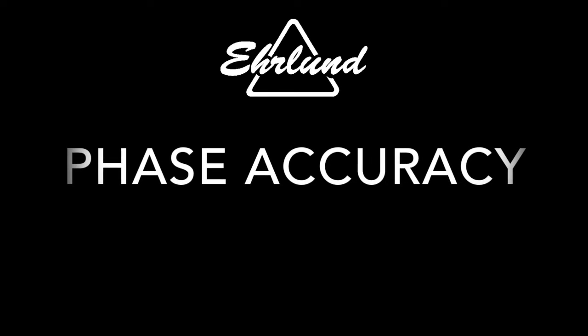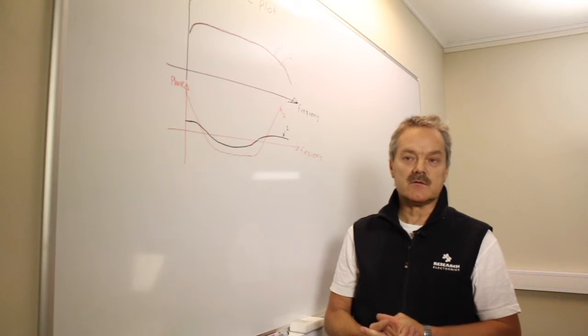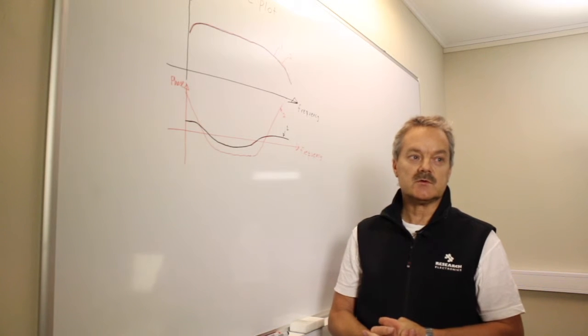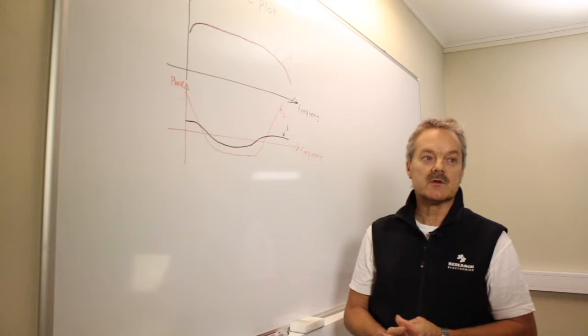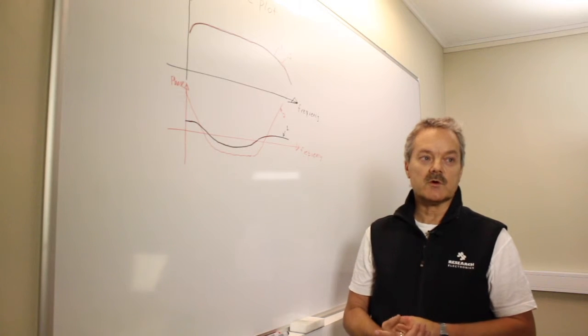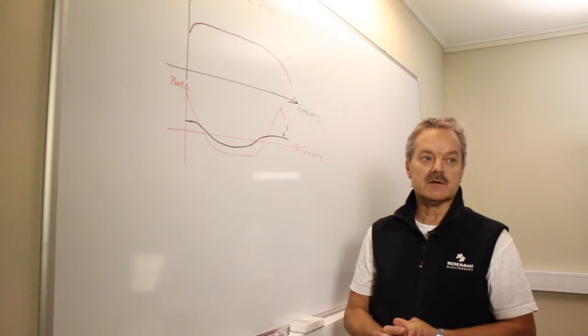Phase Accuracy. A microphone system produces something called dispersion, which means that different frequencies coming into the system go through the system at different speeds. As they exit the system and are added together, they might not look like the same signal that went into the system.